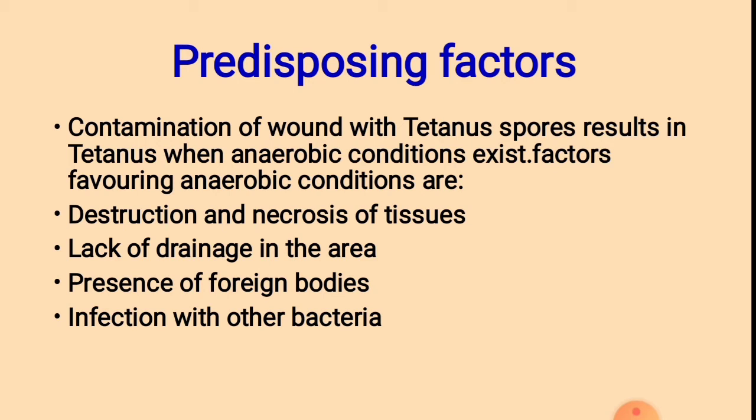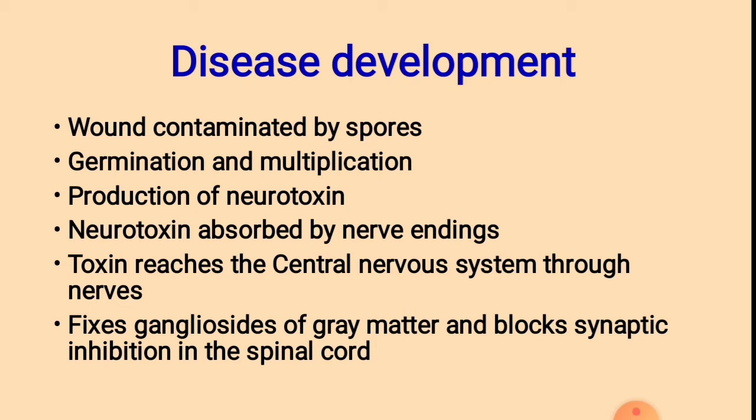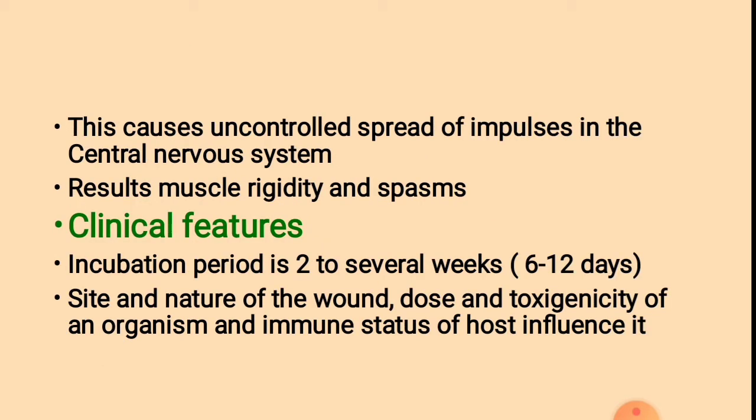Disease development: First, a wound is contaminated by spores produced by Clostridium tetani. These spores germinate and multiply, leading to production of neurotoxin. The neurotoxin is absorbed by nerve endings and reaches the central nervous system through nerves. The toxin fixes gangliocytes of gray matter and blocks synaptic inhibition in the spinal cord, causing uncontrolled spread of impulses, resulting in muscle rigidity and spasms — sudden involuntary muscular contractions.